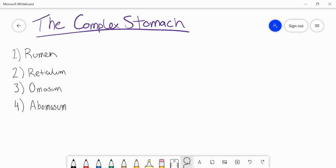The complex stomach in ruminants is made out of four major parts. We have the rumen, the reticulum, omasum, and the abomasum.